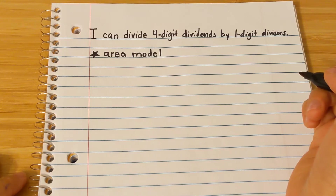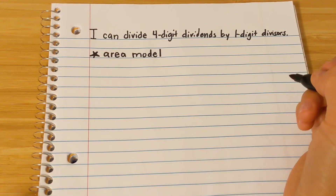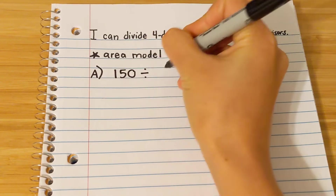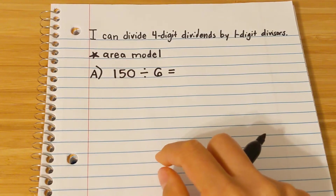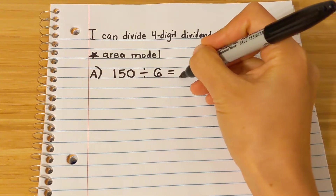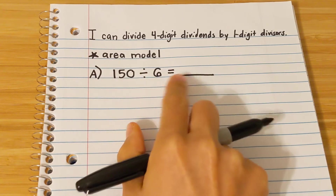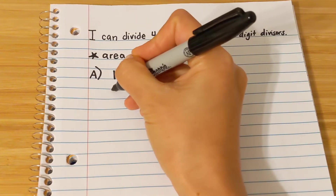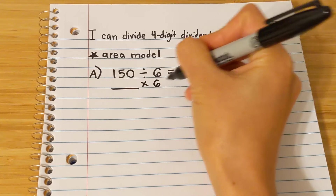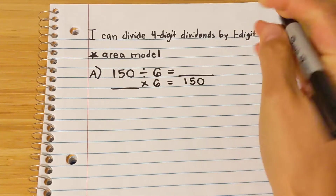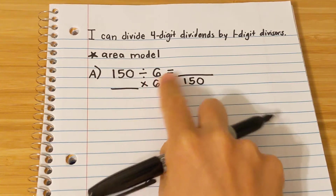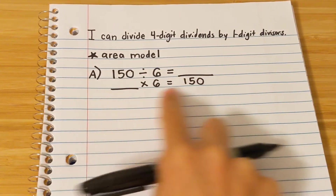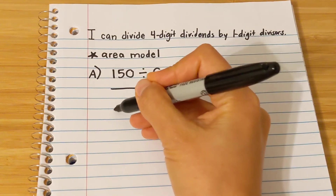So I can divide four-digit dividends by one-digit divisors. We're going to start off with just three digits — something simple. The point of the area model is to incorporate multiplication, because a lot of times multiplication is easier to understand than division. So you write out your problem: 150 divided by 6 equals something. Your answer to a division problem is your quotient. You can rewrite this as something times 6 equals 150 — almost like writing it backwards — to equal your dividend. I'm going to use this second equation as my starting point for the area model strategy.